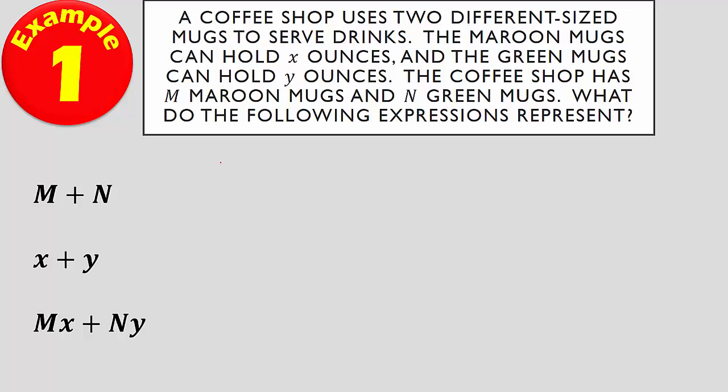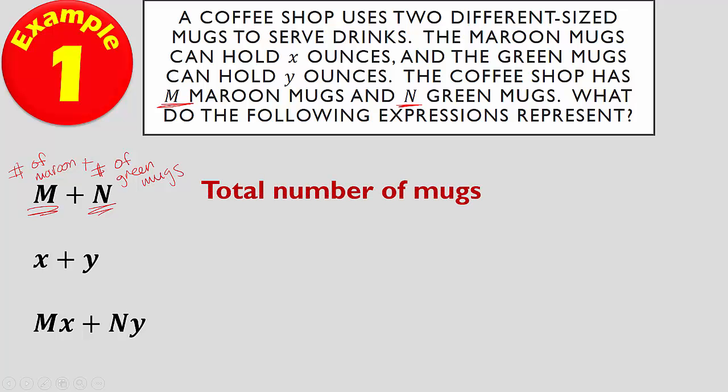We're going to take a look. We have M and N. Let's go ahead and look. M is the number of maroon mugs, and N is the number of green mugs. Now we have M plus N. That's the number of maroon mugs plus the number of green mugs, so that would be the total number of mugs.